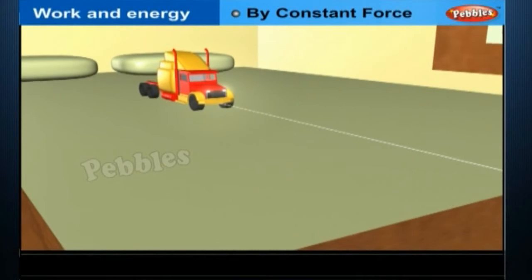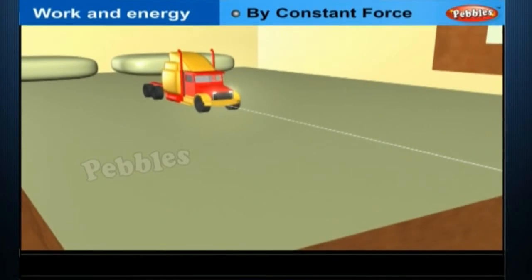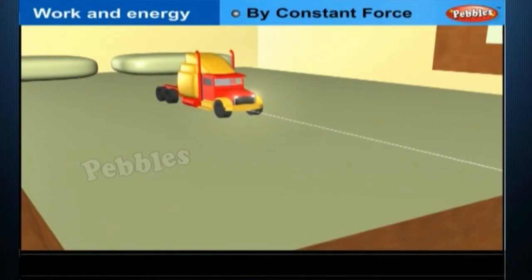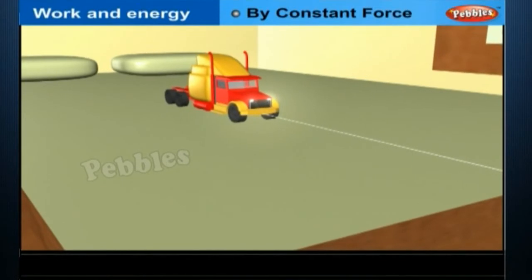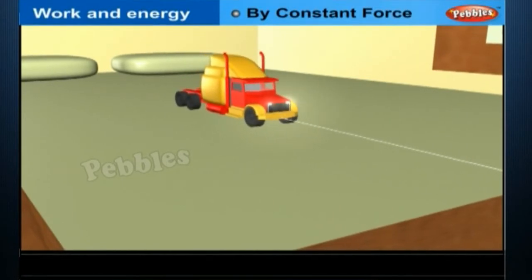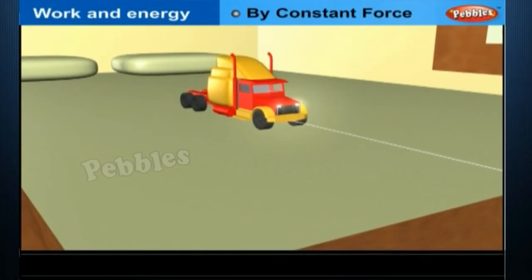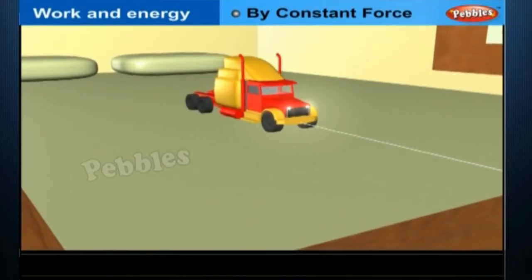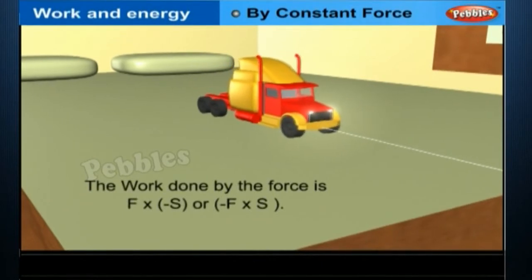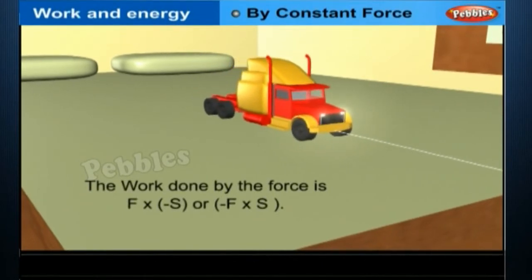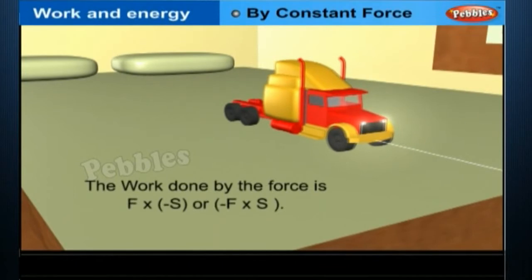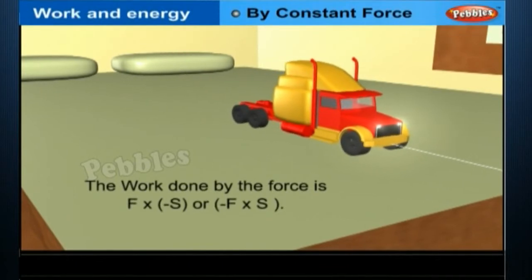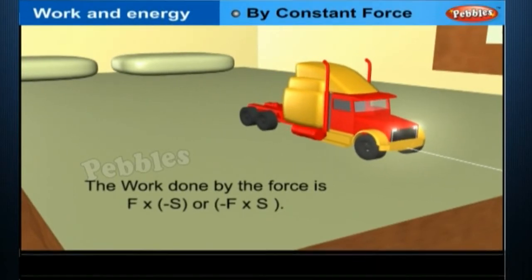Let the object stop after a displacement S. In such a situation, the work done by the force F is taken as negative and denoted by the minus sign. The work done by the force is F into (−S), or −F into S.